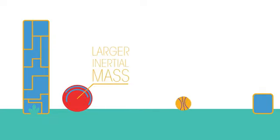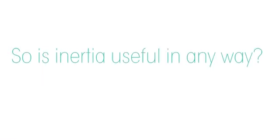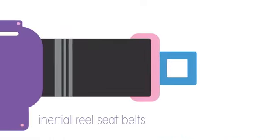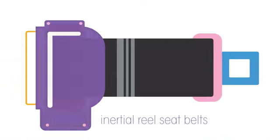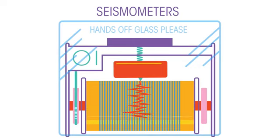So is inertia useful in any way? We can use inertia in mechanical devices such as inertial reel seat belts in cars and in seismometers that detect and record earthquakes.